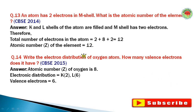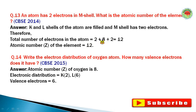Question number thirteen: An atom has two electrons in the M shell. What is the atomic number of the element? K and L shells are filled, so K = 2, L = 8, and M = 2, giving a total of 2 + 8 + 2 = 12 electrons. An element with atomic number 12 is magnesium.